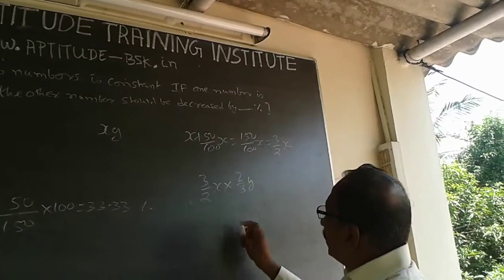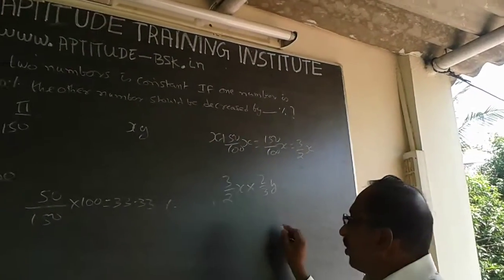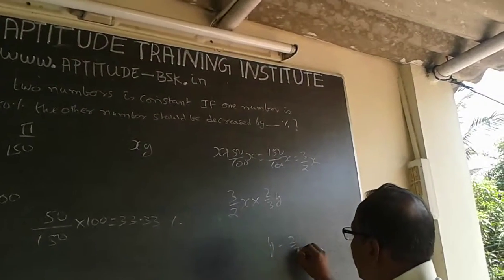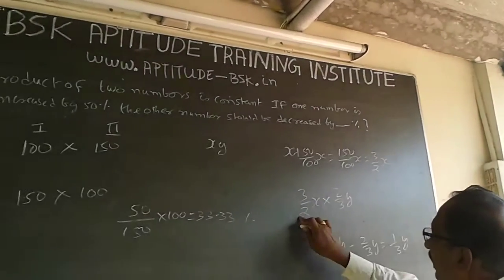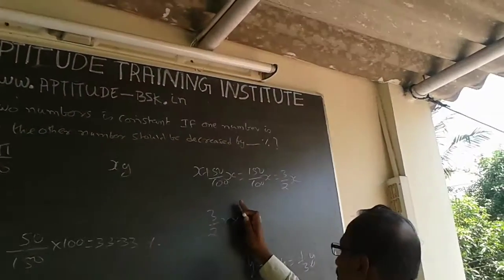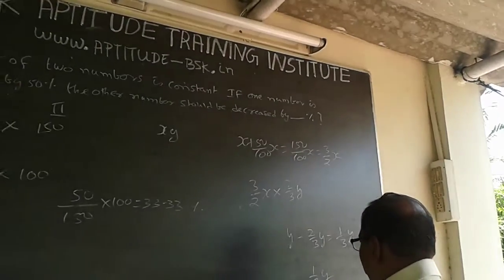What is happening is y is getting reduced to 2/3 of y, means 1/3 of y is getting reduced. The reduction is y - 2/3 y = 1/3 y. So 1/3 y divided by y times 100 equals 33.33%.